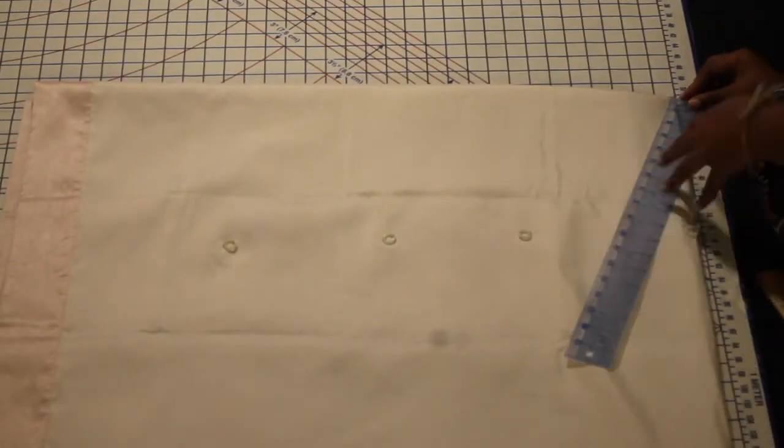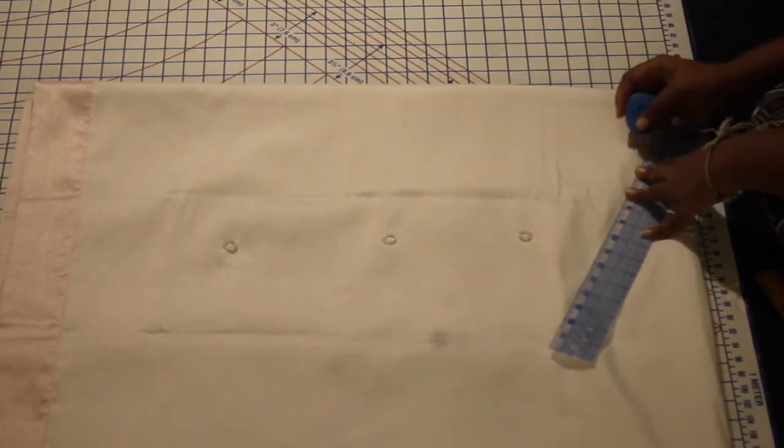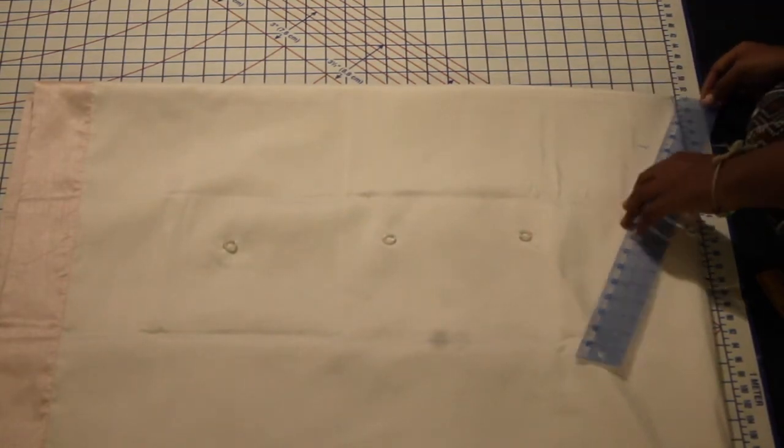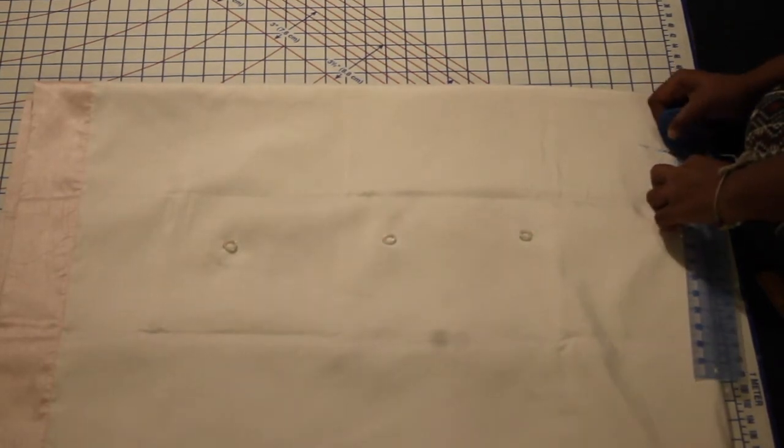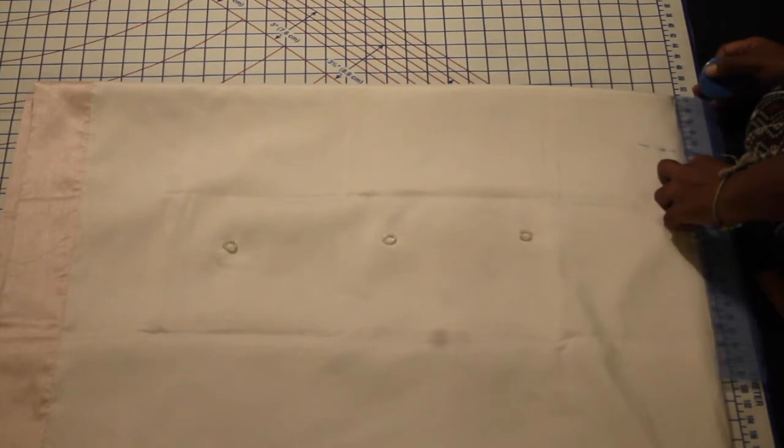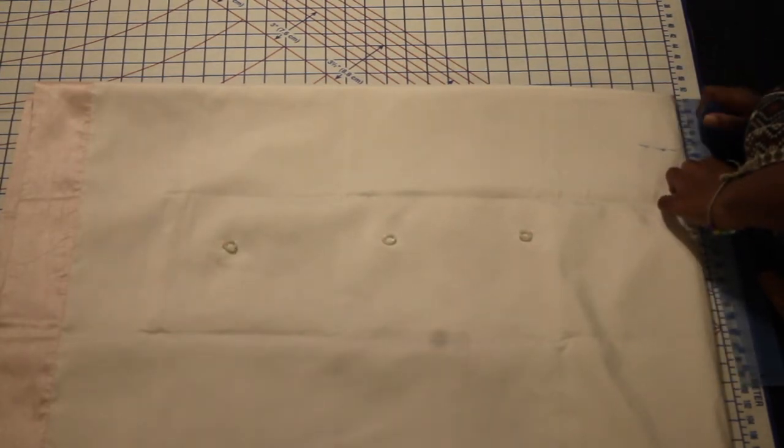You're going to take your ruler and go around the corner and mark where the app told you to mark for your waist measurements. You're going to go all the way around that corner.